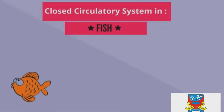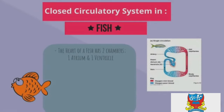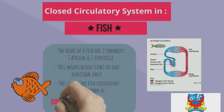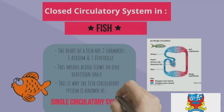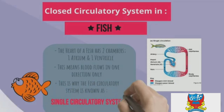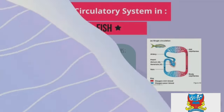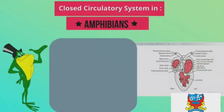In fish, the heart has two chambers — one atrium and one ventricle — meaning blood flows in one direction only. This is why the fish circulatory system is known as the single circulatory system.